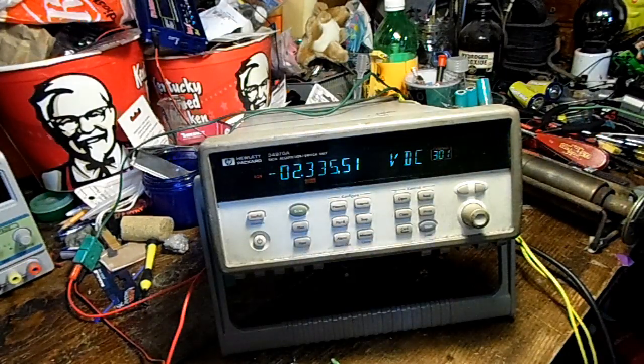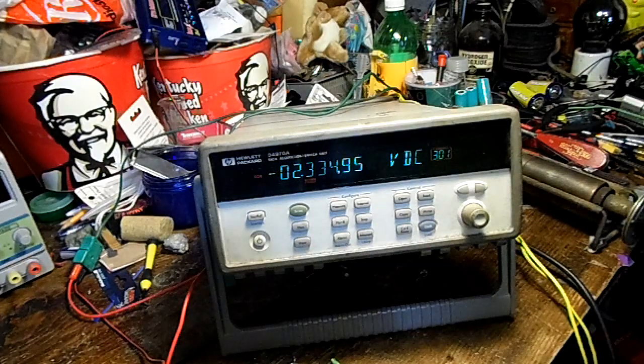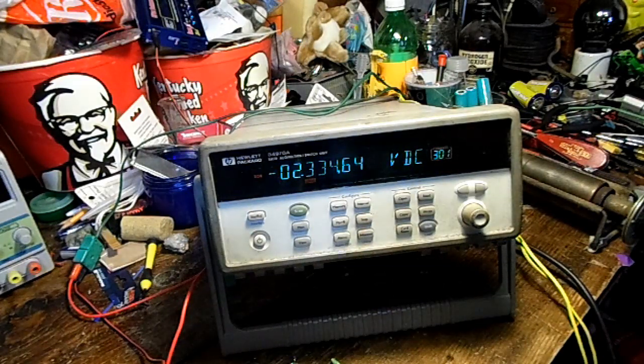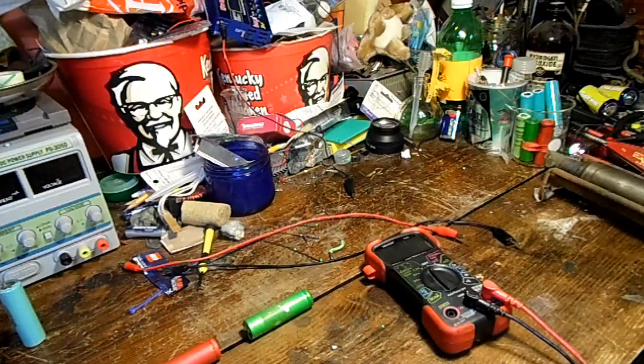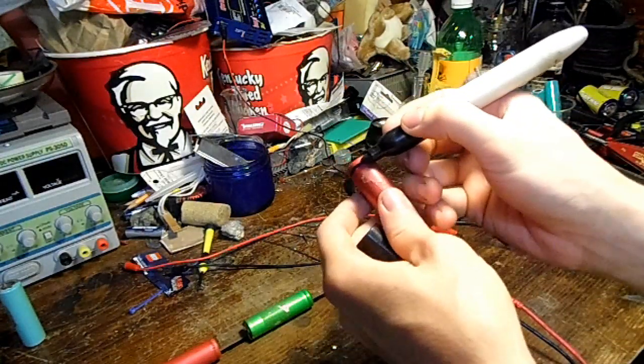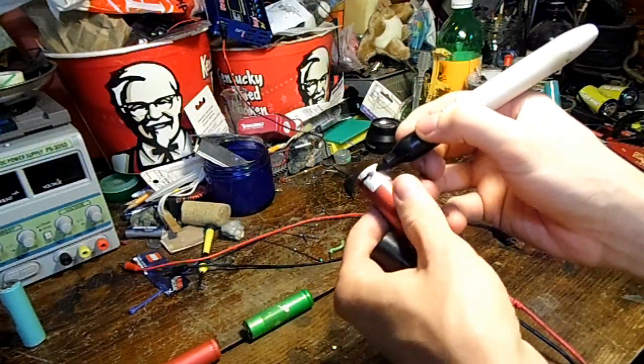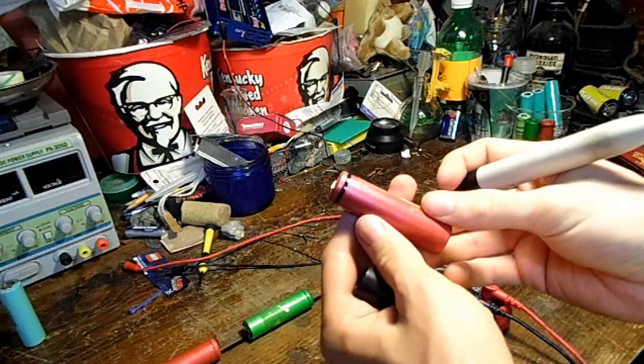I came back a half hour later and it's still going down. Yeah, that's a pretty bad cell. Might blow it up or something, that'd be kind of cool. So how I signify that cells are bad is I draw a line around the top.